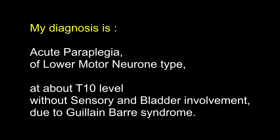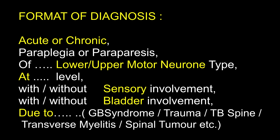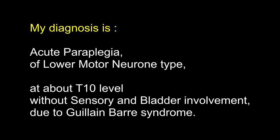My diagnosis is acute paraplegia of lower motor neuron type at about T10 level, without sensory and bladder involvement, due to Guillain-Barré syndrome. Why do you say it is due to Guillain-Barré syndrome? There is history suggestive of viral fever one week prior to the onset of paraplegia. The onset of weakness is ascending type — distal to proximal. On examination, it is a lower motor neuron type of paraplegia with no sensory involvement, no bladder and bowel involvement, and no cranial nerve involvement.